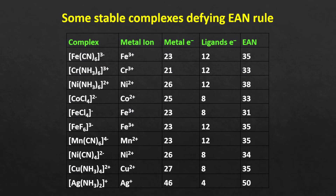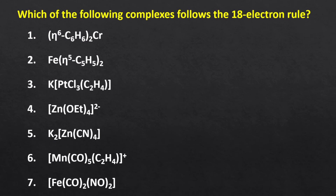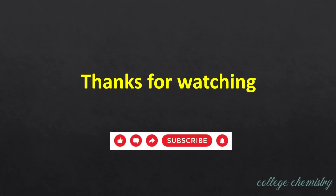Some organometallic compounds do not obey the effective atomic number rule but they are quite stable. Their stability can be explained by valence bond theory, crystal field theory, or molecular orbital theory. I hope now you all understand and can predict whether the following complexes follow the effective atomic number rule. Thanks for watching — see you in the next video of this series.